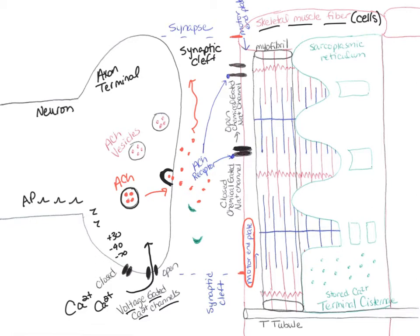On the cell membrane of the muscle, we have channels that are gated channels sensitive to chemicals, so we call them chemical-gated channels. Because they only let sodium through, we call them chemical-gated sodium channels. On the surface of that gated channel is a receptor specific to the ACh molecule. When ACh is in the synaptic cleft, it travels across and binds to that receptor, and the channel will open up.